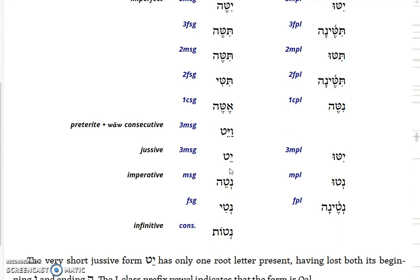You're going to have to figure out from those forms that the root is nun-tet-hey, even though you don't see a nun - not even the dagesh of what used to be a nun - or a hey. They're both gone, and so that makes that particular form very tricky to figure out.